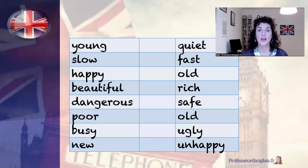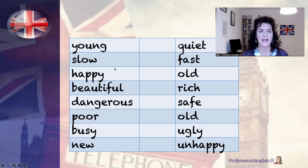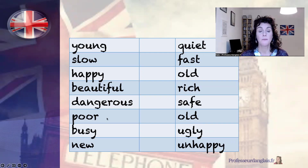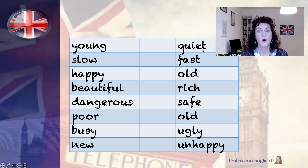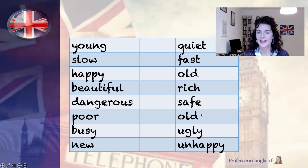Okay, so now we're going to look at opposites. Here we have lots of common adjectives: young, slow, happy, beautiful, dangerous, poor, busy, and new. On the other side we have: quiet, fast, old, rich, safe, old, ugly, and unhappy. You can pause the video if that helps and see if you can find the opposites.